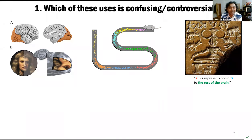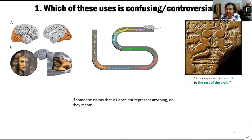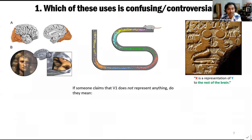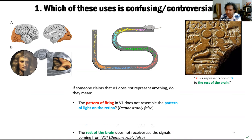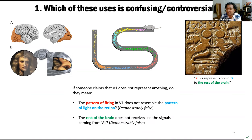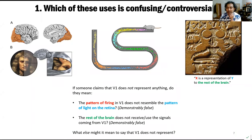So which of these uses of representation is controversial? Who has a problem with any of this? If someone claims that V1 does not represent anything, what could they possibly mean? Does the pattern of firing in V1 not resemble the pattern of light impinging on the retina? I think that's demonstrably false. Does the rest of the brain not receive or use the signals coming from V1? Again, demonstrably false. So what else might it mean to say that V1 does not represent? I don't really know.